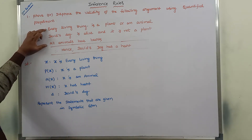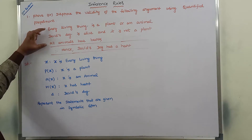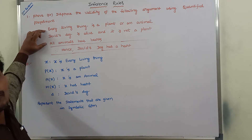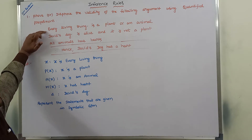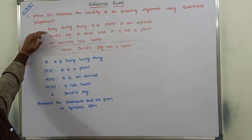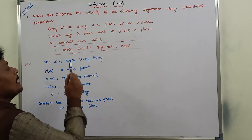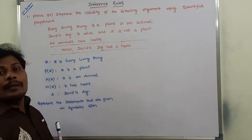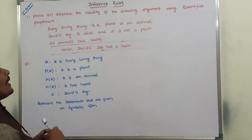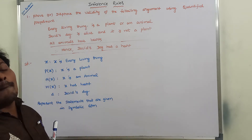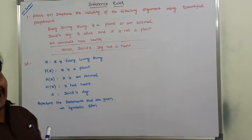These three statements also contain quantifiers, so we can say that these three statements or propositions are called quantified propositions. Each and every proposition has either a universal quantifier or an existential quantifier. We have to prove that these three given propositions derive this conclusion or not. First we have to write the propositions in terms of predicates.